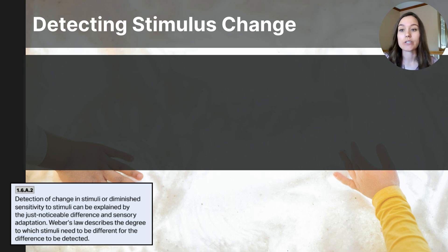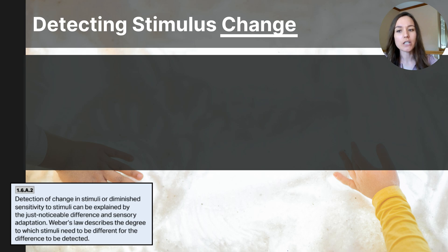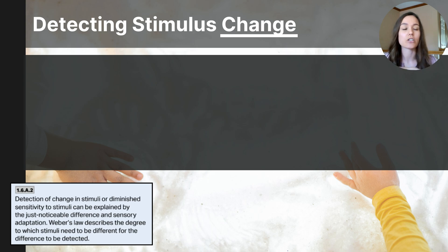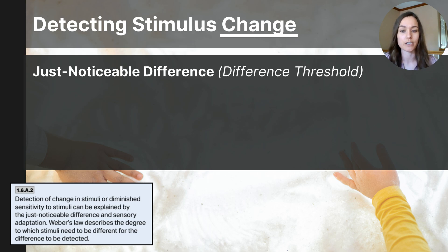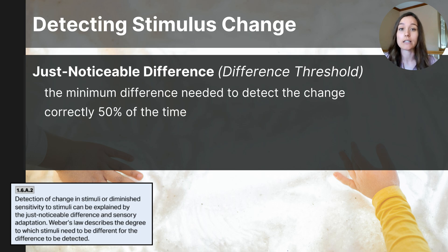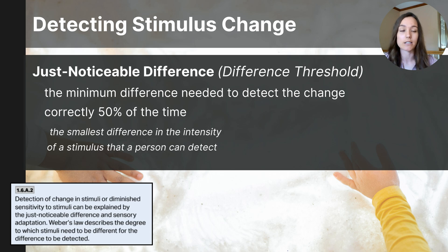We also need to be able to detect differences in stimuli. This brings us to our ability to detect that a stimulus has changed its intensity. For example, if a musician is tuning an instrument, they need to detect the change in sound to identify when they're on the correct note. The point where we can notice when a stimulus has changed is referred to as the just noticeable difference, or the difference threshold — defined as the minimum difference needed to detect the change correctly 50% of the time. It is the smallest difference in intensity of a stimulus that a person can detect.